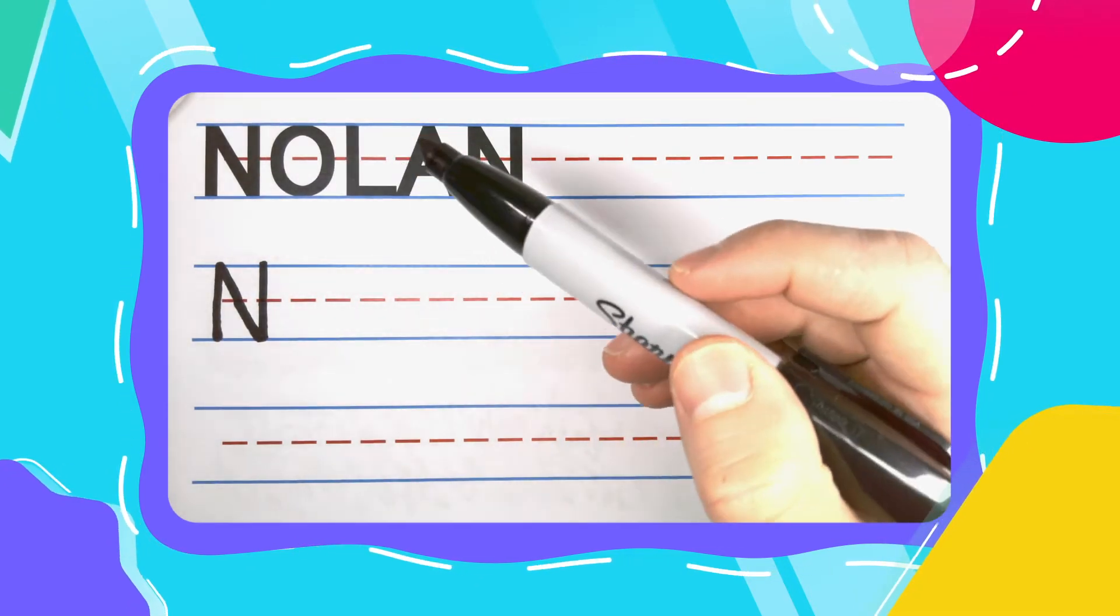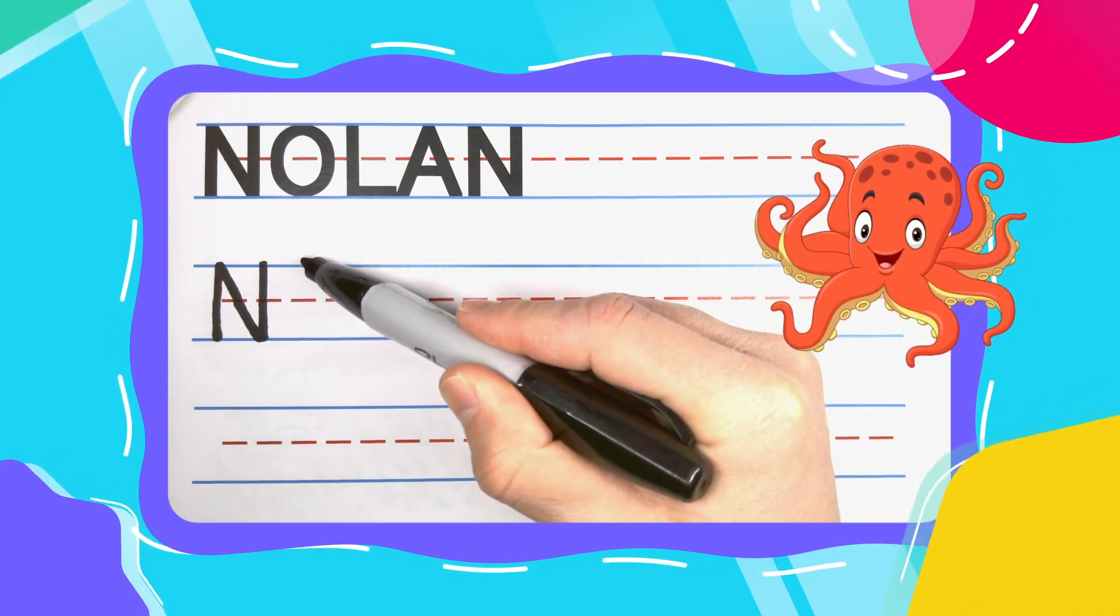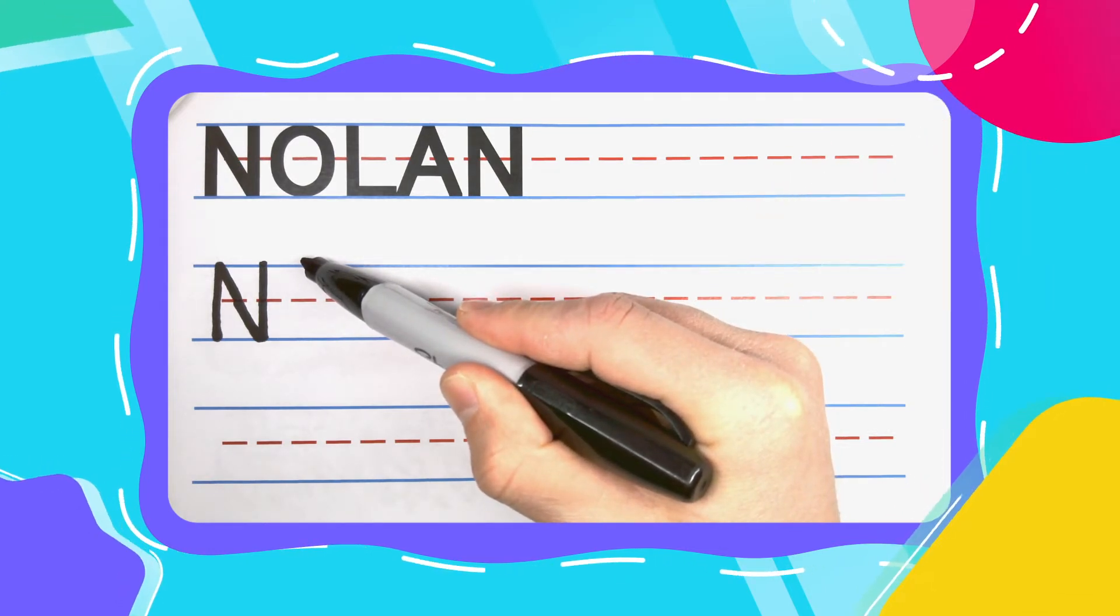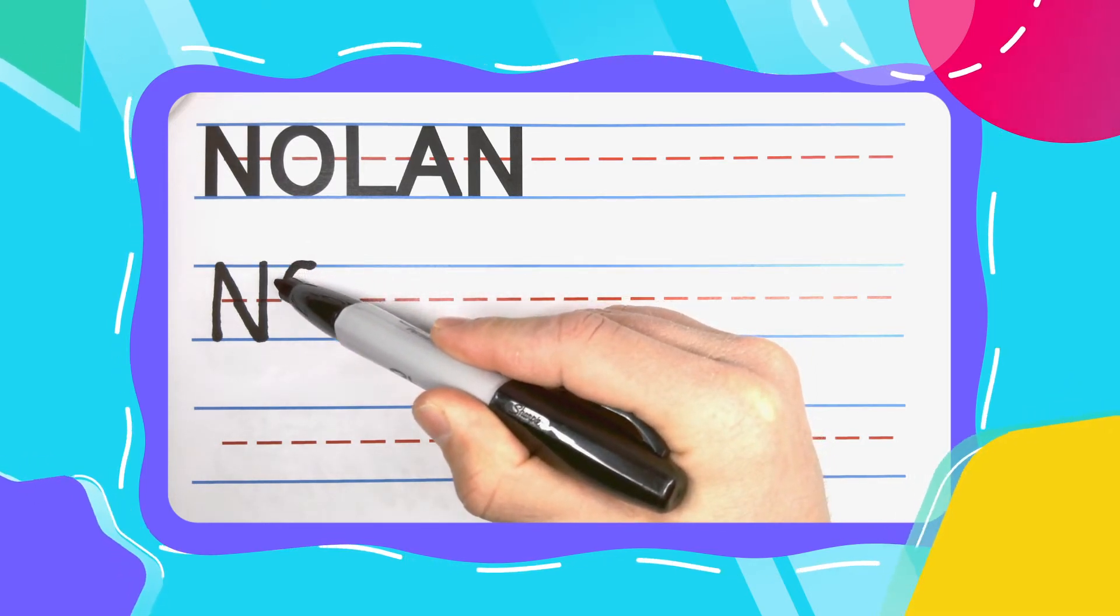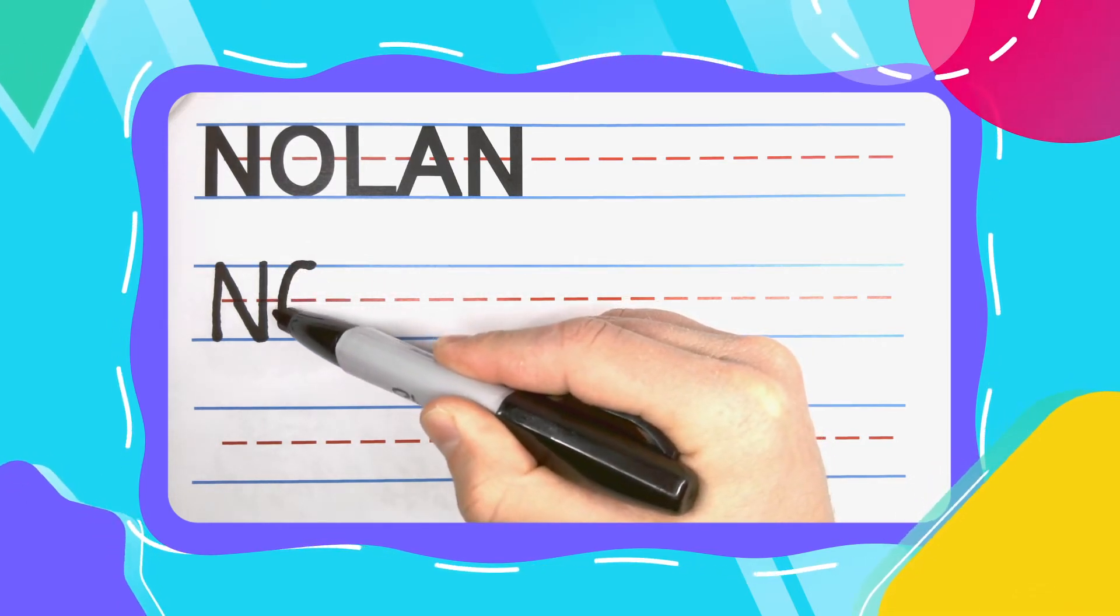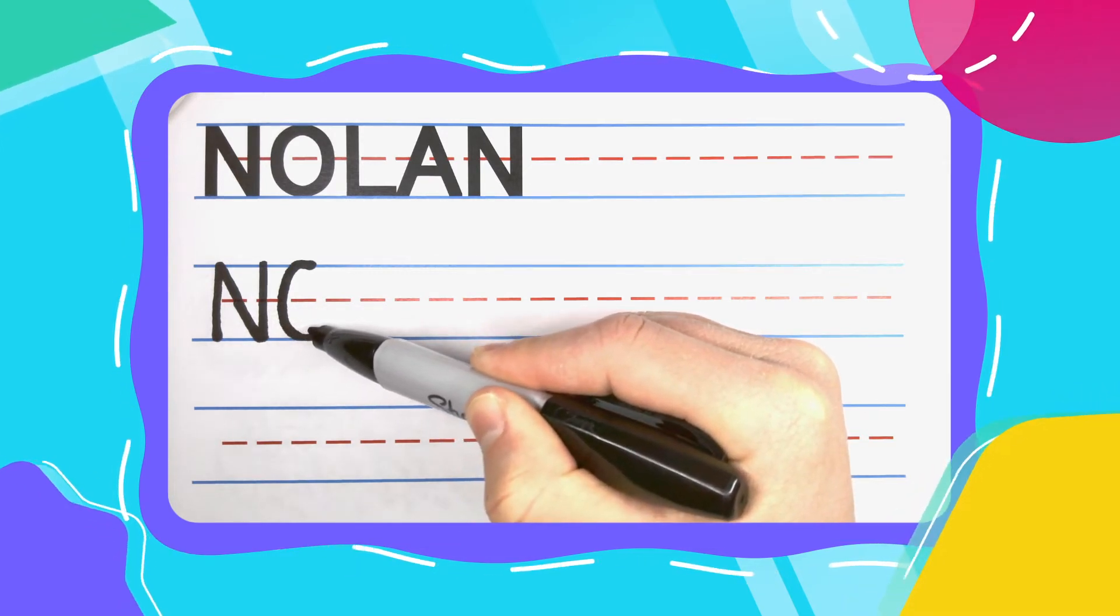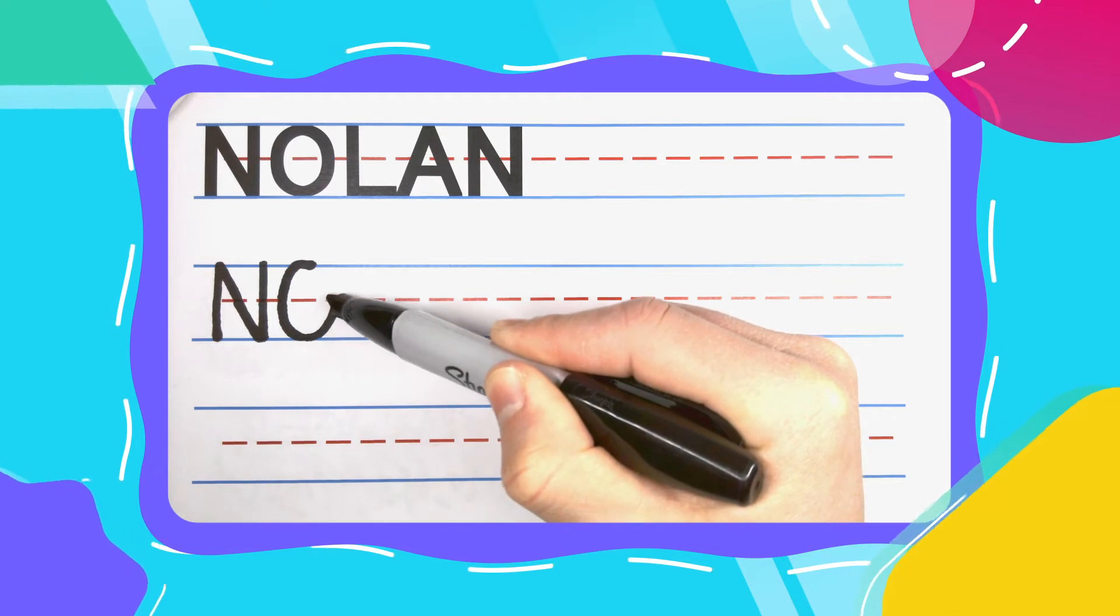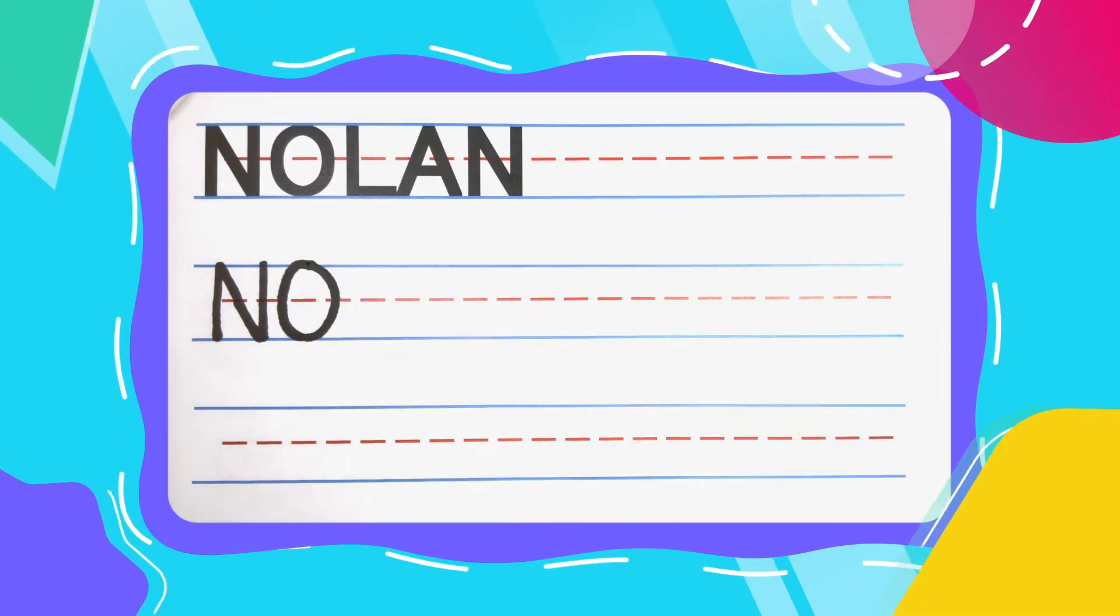The next letter in Nolan is the ovally O. Ovally O's are exactly that. Start at the top, come out to the left, and quickly start to curve. As you draw a circle or an oval all the way down to the bottom, touch the bottom. Curve, curve, curve. Keep curving back to the left and finish where you started.